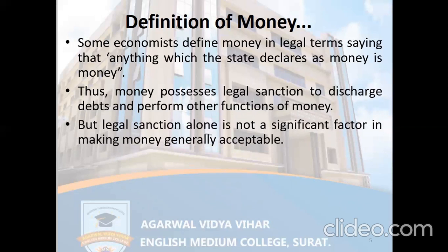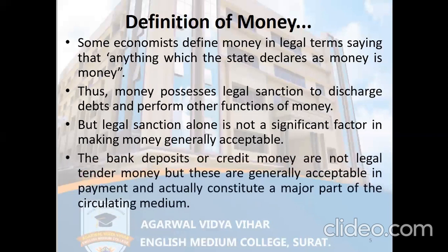However, legal sanction alone is not a significant factor — it is not the most important factor in making money generally acceptable. Certain things are generally acceptable even though they are not legal. So the criteria for considering anything as money must be general acceptability and not legal sanction alone. For example, bank deposits or credit money are not legal tender, but these are generally acceptable in payment and actually constitute a major part of the circulating medium.